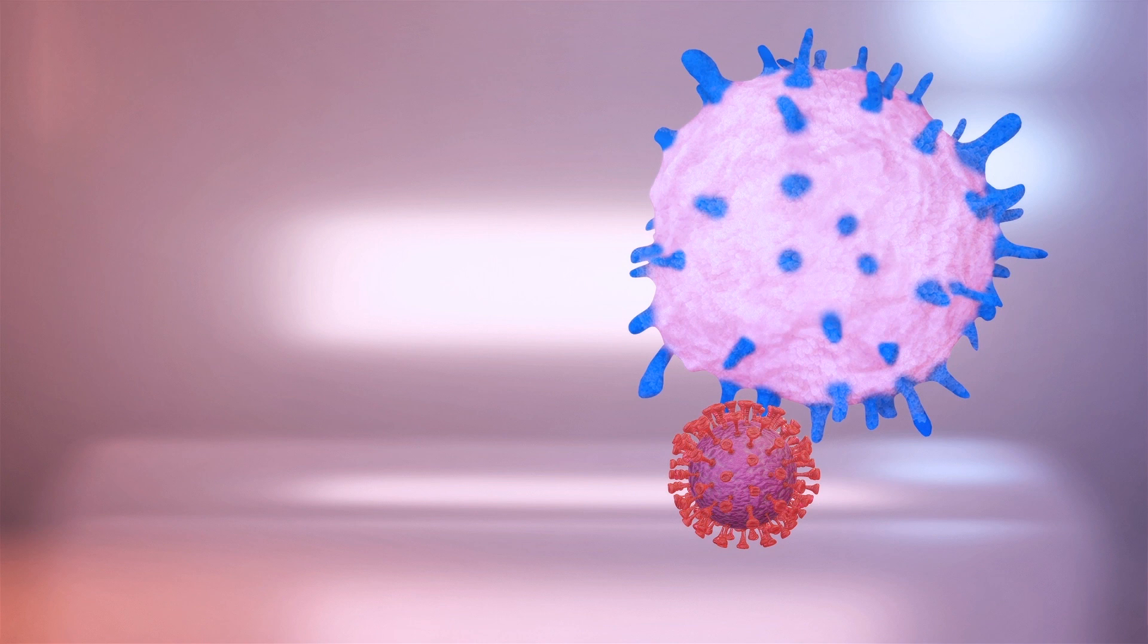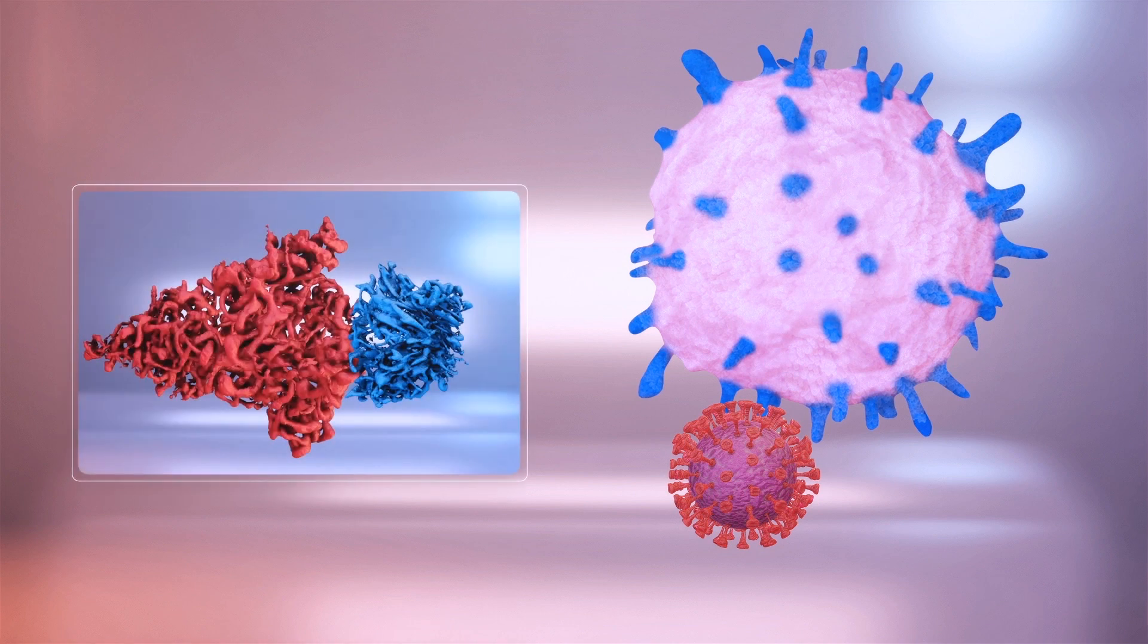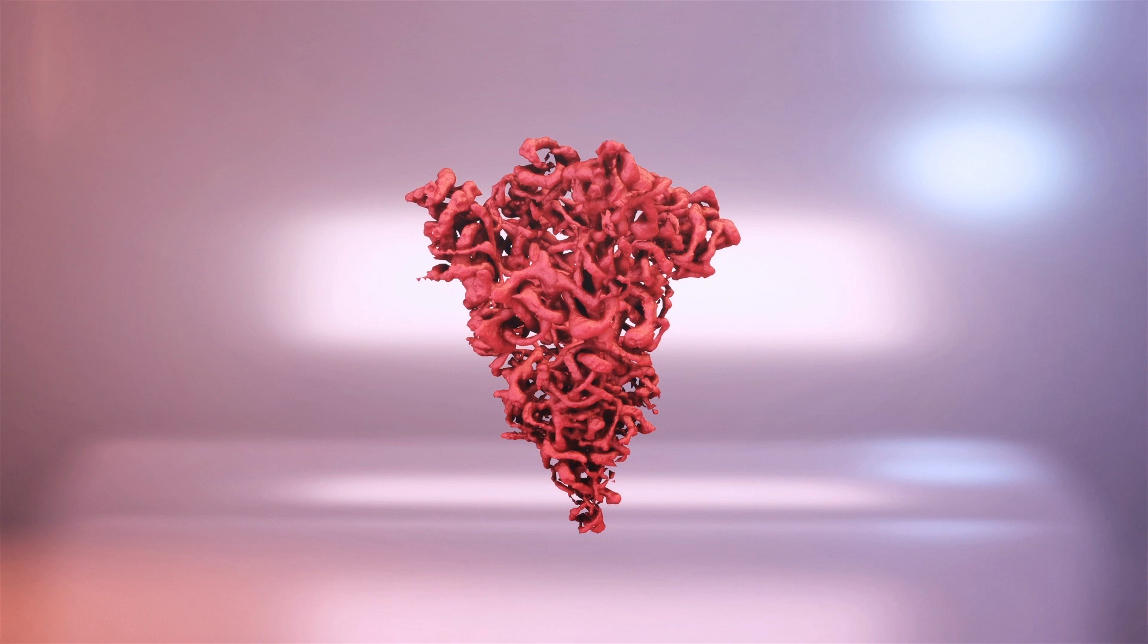The Indian variant is able to spread more easily than earlier forms of the virus partly because of a mutation it carries on its spike protein called L452R, according to Grace Roberts, research fellow in virology at Queen's University, Belfast, writing in the conversation.